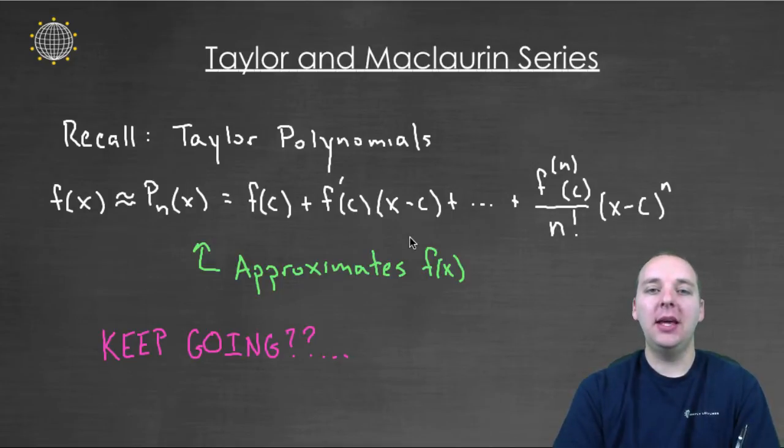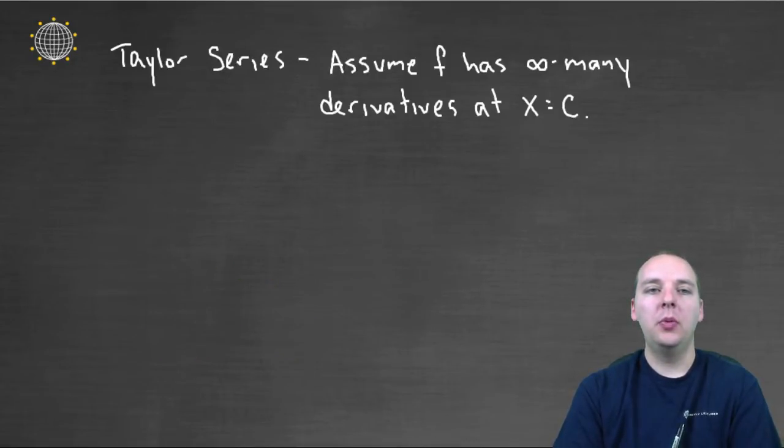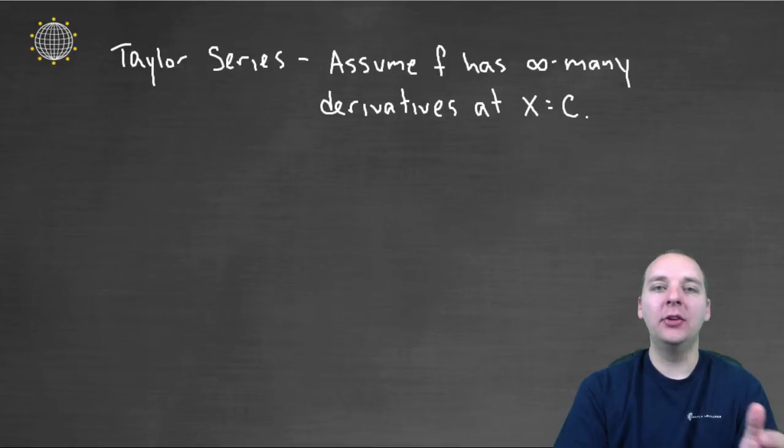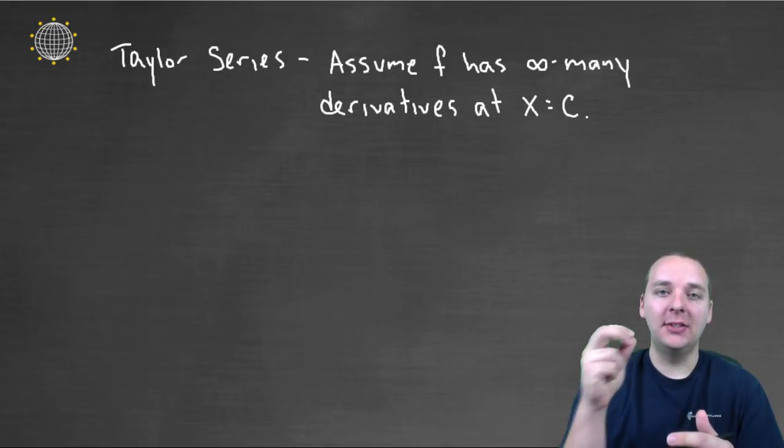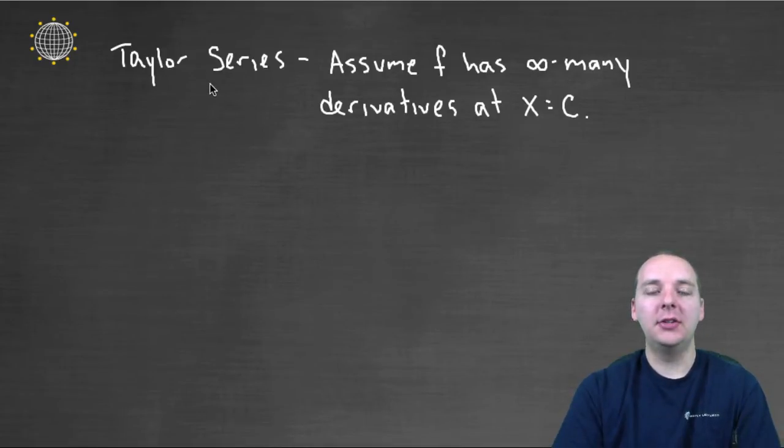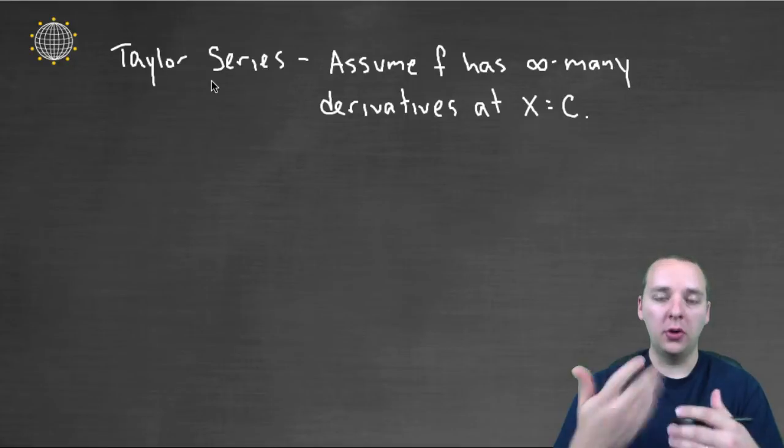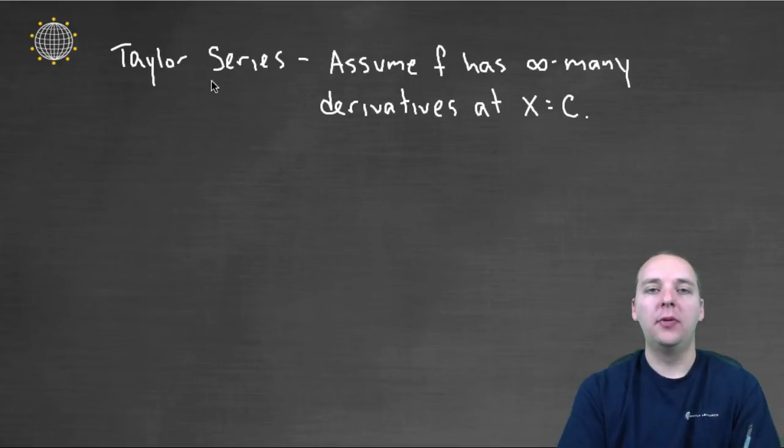It would actually be some sort of power series, right? Because you have coefficients of x minus c to the nth power. So what would happen if we keep going? Well we wind up getting these things called Taylor series, not Taylor polynomials. By definition a polynomial has a fixed degree, where a Taylor series on the other hand keeps going and going and going on forever.